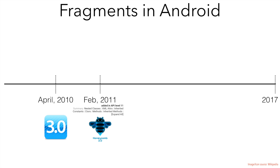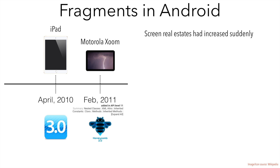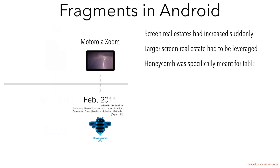This was also the year that iPad was introduced. And to compete with iPad, Android introduced the Honeycomb version, and the very first device that had Honeycomb was Motorola Xoom. So with the introduction of tablets into the handheld devices market, suddenly things had changed. The screen real estate had increased, and the larger screen real estate meant that it had to be leveraged in a much more different way than a normal mobile screen.